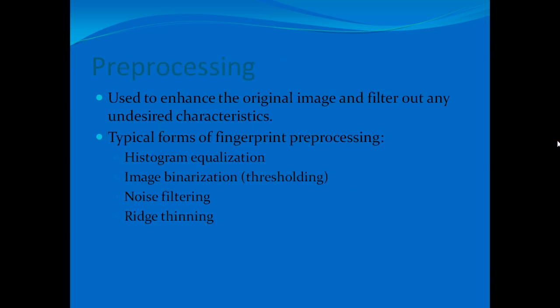Pre-processing is typically the first step in any fingerprint recognition system. It is used to enhance the original image and filter out any undesired characteristics. The typical forms of fingerprint pre-processing include histogram equalization, image binarization (commonly known as thresholding), noise filtering, and ridge thinning.